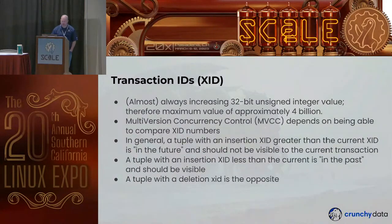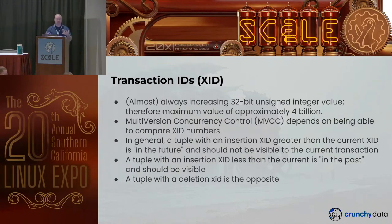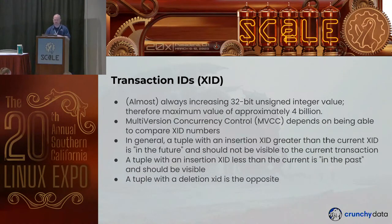What are transaction IDs in Postgres? The simplest thing: it's an almost always increasing 32-bit unsigned integer value inside Postgres, and therefore it has a maximum value of approximately 4 billion. Postgres uses a system called Multiversion Concurrency Control, or MVCC, to compare those transaction IDs so it knows how to manage concurrent operations.